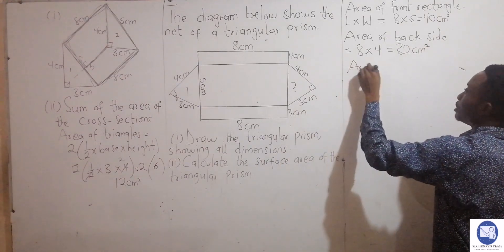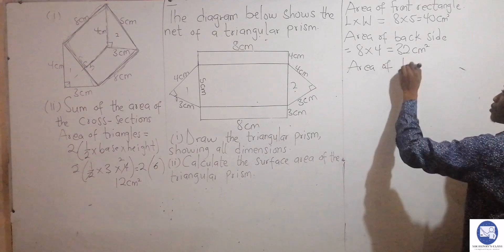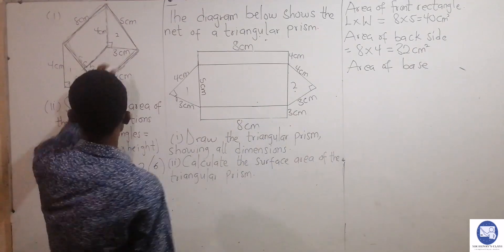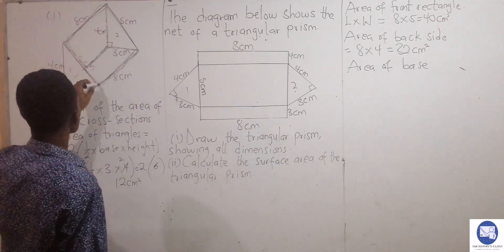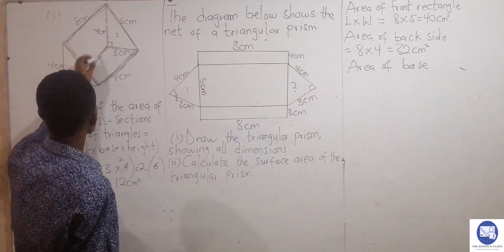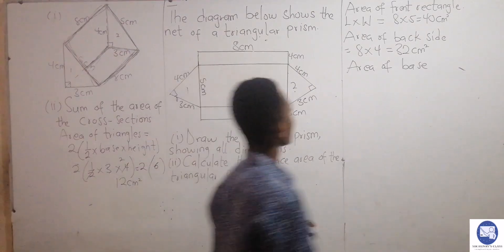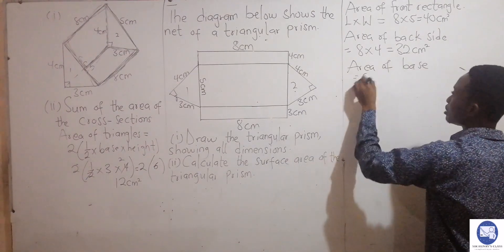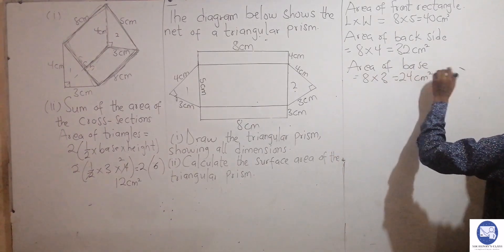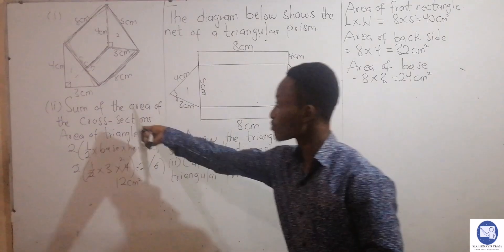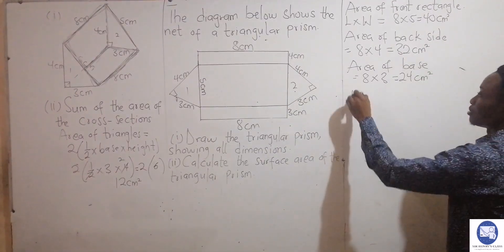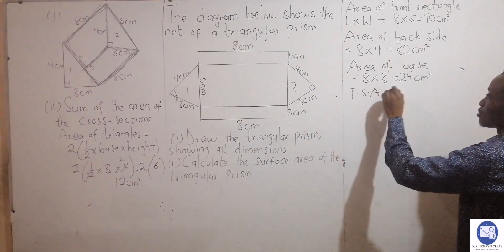And the last one, the base. The area of the base is also a rectangle: eight times three, which gives 24 centimeters squared. So I now find the totals of all these areas — the surface area — and I'm going to sum them up. The two triangles give 12 centimeters squared.